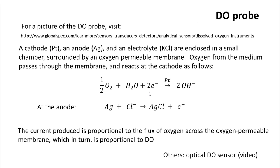We looked at the dissolved oxygen aspect in the previous lecture. While talking about the DO probe, there was some slight confusion due to an error. To clarify: the cathode is platinum and the anode is silver.